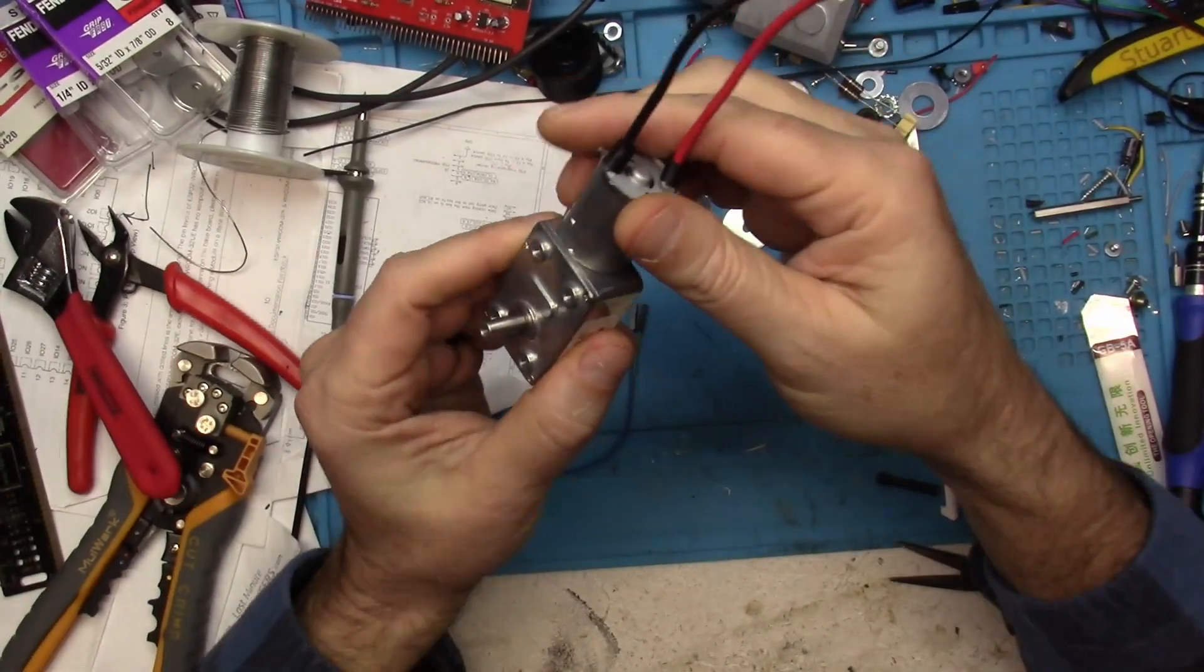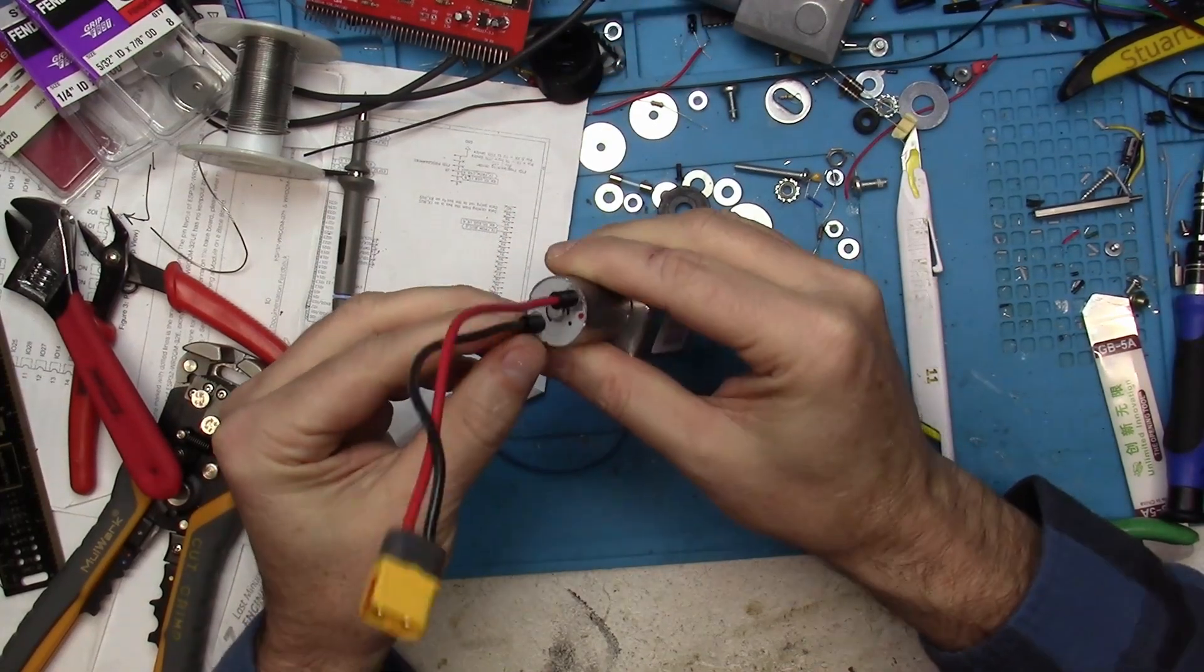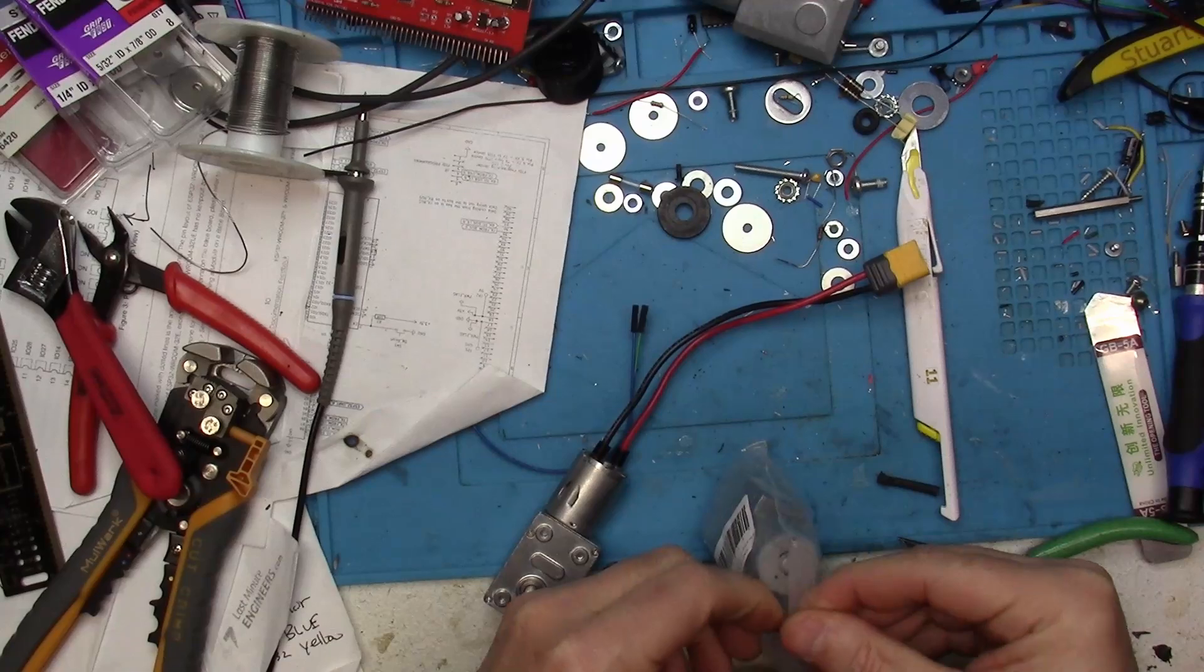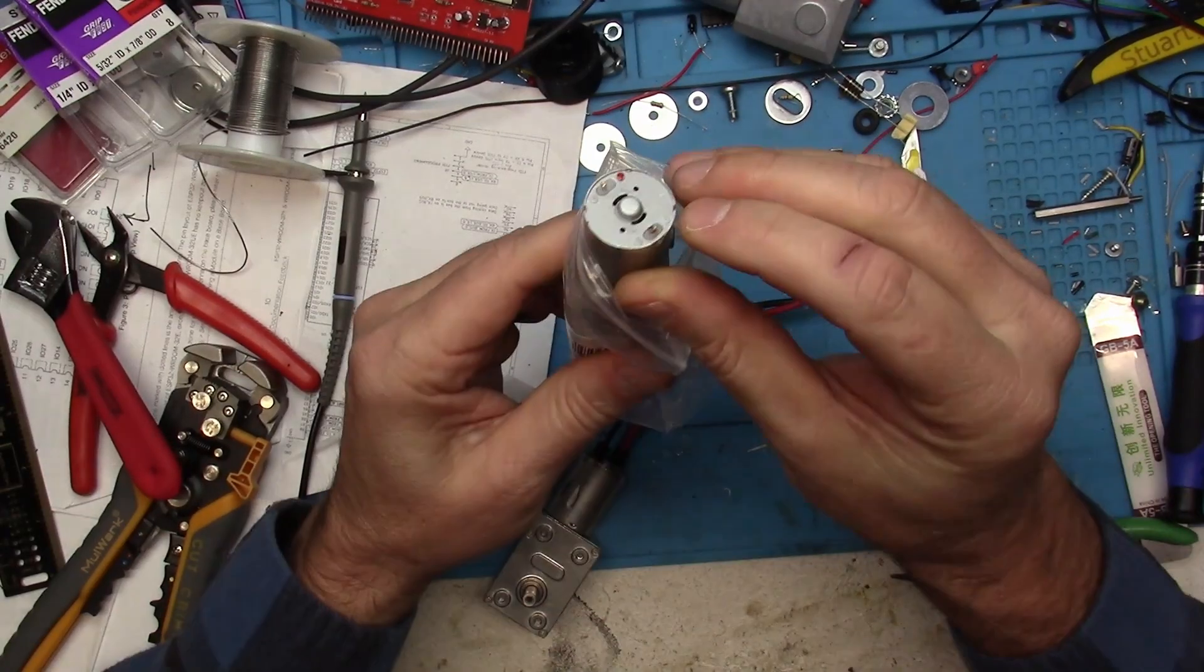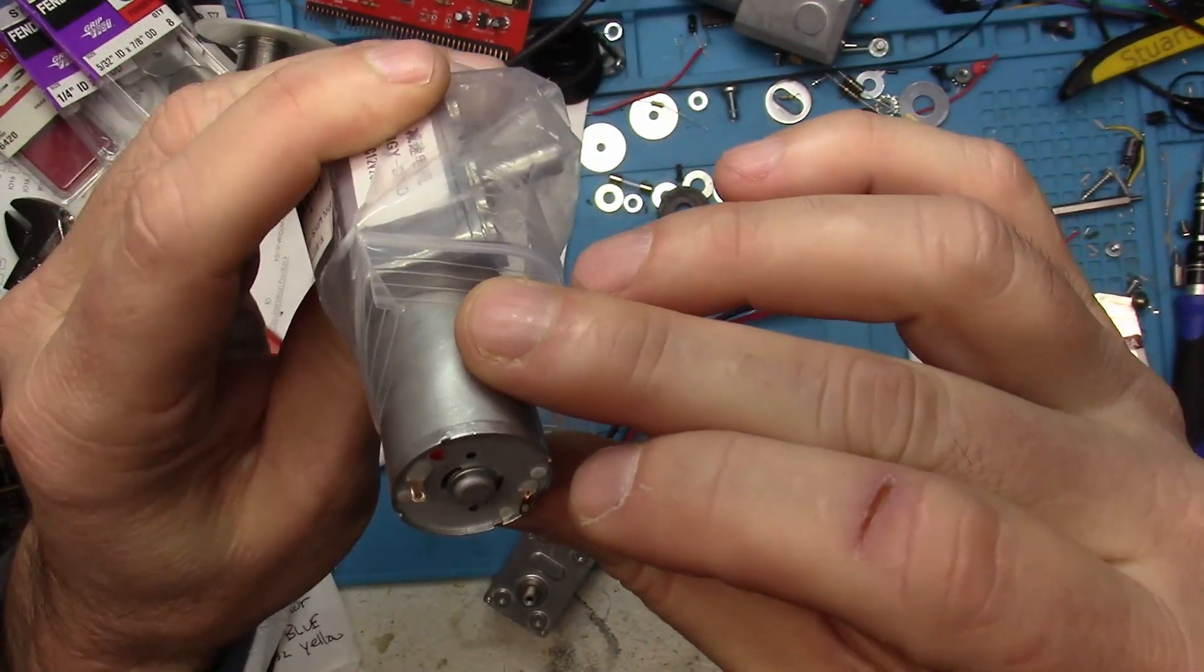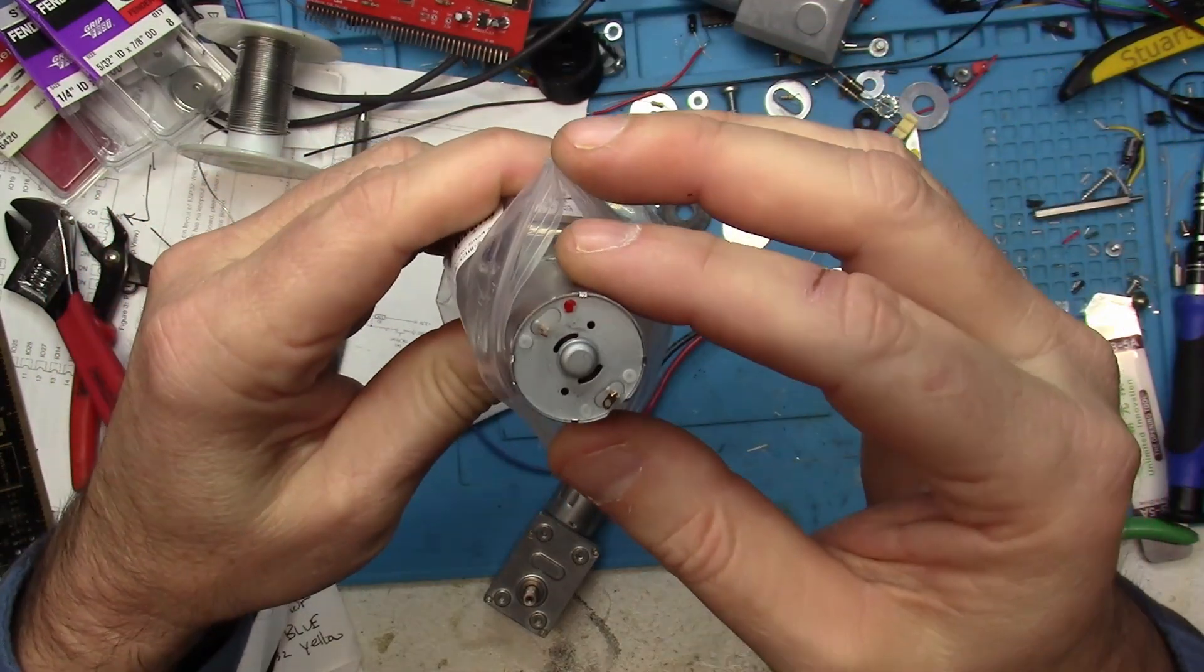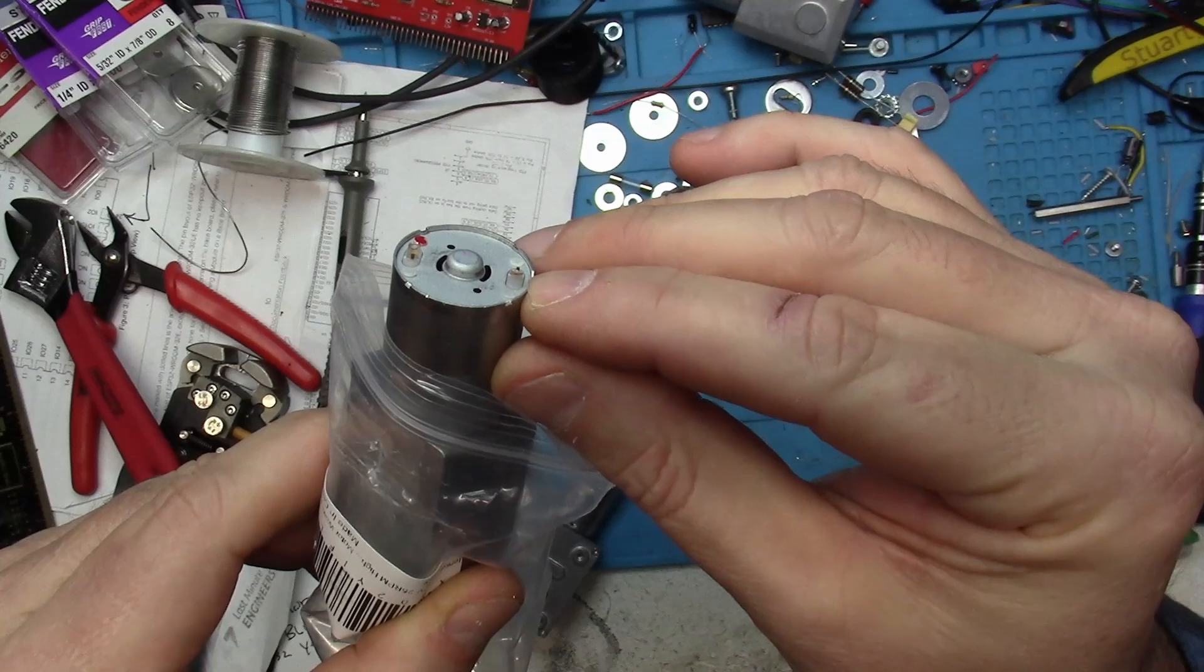So one of the things I did was to add these 3D printed covers because the motor comes with these very small connectors. In fact, this one's already bent. It's just horrible design.